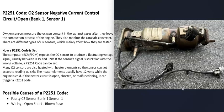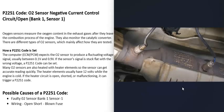O2 sensors do two things. First, they monitor how much oxygen was burnt off during combustion, and the computer uses that information to adjust the air-fuel ratio mixture going into the cylinders. Second, they monitor the catalytic converter. When you get this P2251 code, the computer is seeing a problem with one of these sensors — mainly the bank one sensor one O2 sensor.